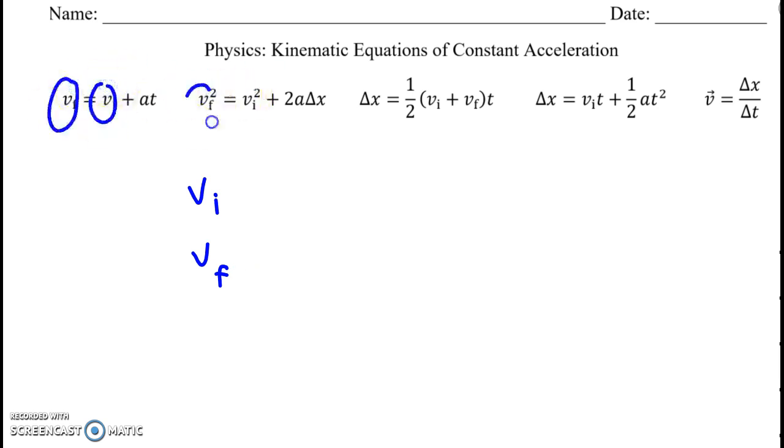And look, you see vi, vf, vi, vf, vi, vf. There's only a vi here, but there's acceleration, so the a indicates acceleration.